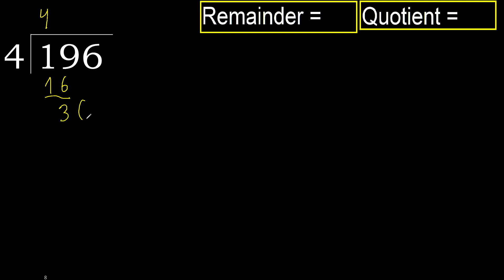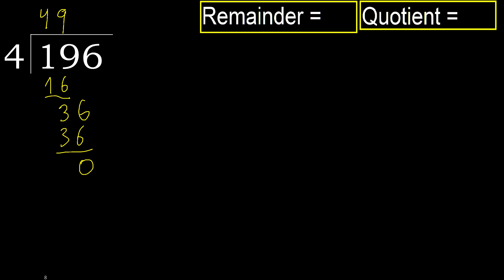Next, bring down 6 to get 36. 4 multiplied by 9 is 36. 36 is not greater, subtract to get 0. There is no next digit, therefore we finish.